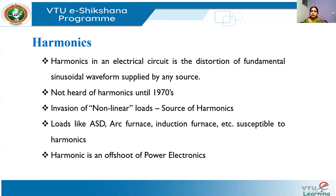Why is harmonics an overshoot of power electronics? There is nothing wrong with power electronics, but in power electronics we have switches that turn on and off to control the voltage. We have many circuits — rectifiers (AC to DC converters), AC voltage controllers, inverters (DC to AC), and DC to DC converters like choppers. All these power electronic converters have switches, and by turning them on and off to control the voltage, we make the waveform slightly different from a sine wave.